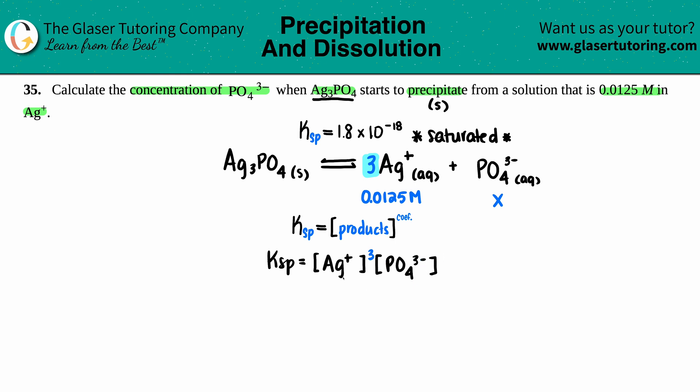Now let's see, the Ag value is 0.0125, the phosphate was the x value, and the Ksp that we got from the back of the textbook is 1.8 times 10 to the negative 18th. Let's plug it in: 1.8 times 10 to the negative 18th equals 0.0125 cubed times x.